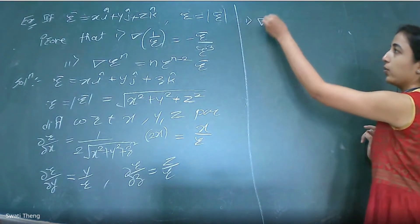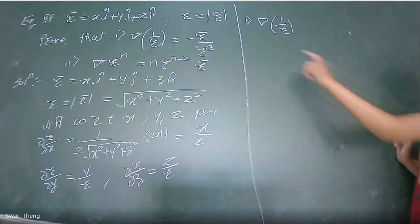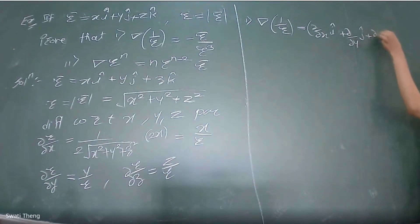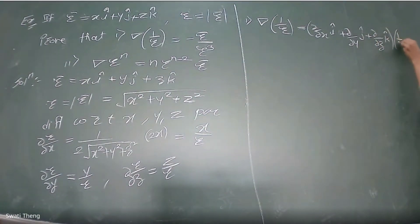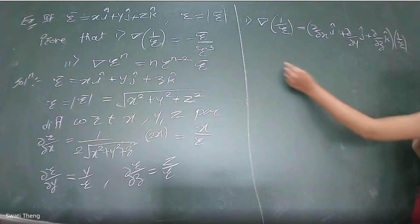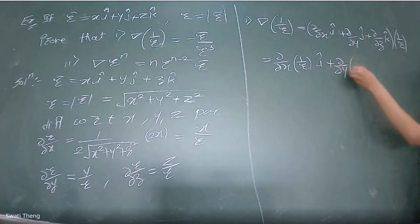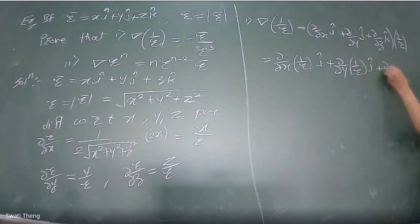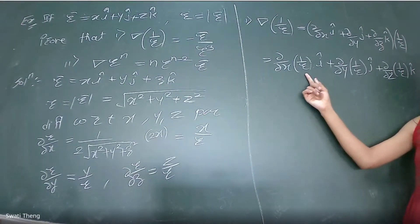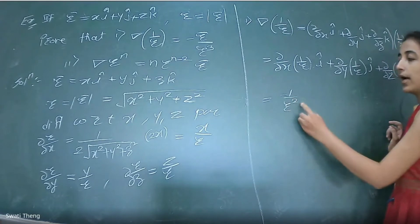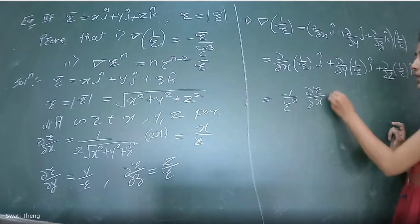Now, option 1: find ∇(1/r). We know ∇ = (∂/∂x)î + (∂/∂y)ĵ + (∂/∂z)k̂, applied to (1/r). Expanding: ∂/∂x(1/r)î + ∂/∂y(1/r)ĵ + ∂/∂z(1/r)k̂. Since 1/r is a function of x, y, z, differentiating partially with respect to x gives -1/r² times ∂r/∂x î.